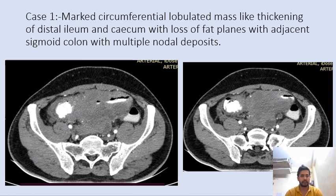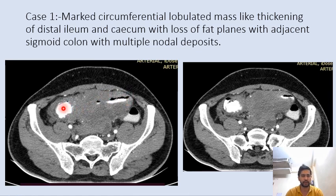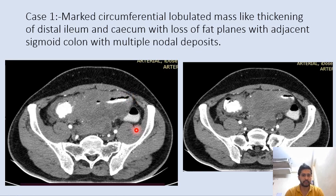In case one, we can see marked circumferential, lobulated mass-like thickening of the distal ileum. We can still see the lumen with contrast passing through, so no intestinal obstruction has occurred even at this advanced stage. We can also see nodal deposits here.